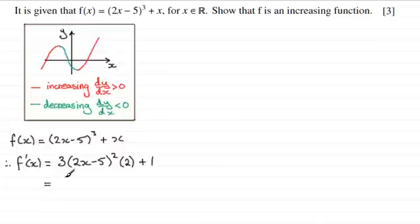So tidying this up, we get 3 times 2, which is 6, multiplied by 2x minus 5 all squared, plus 1.